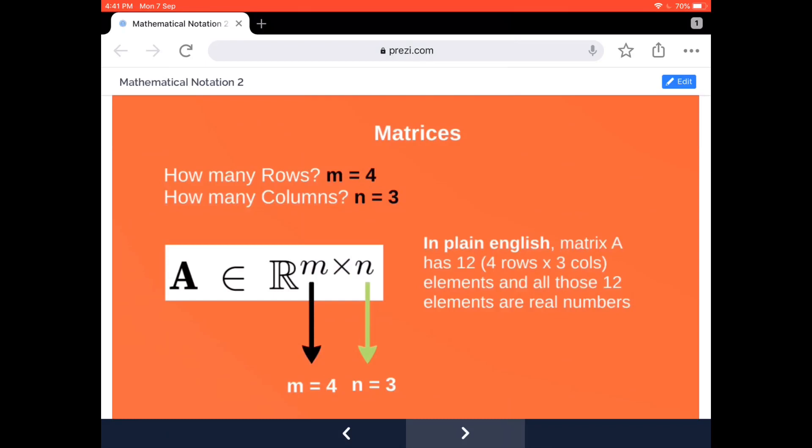four rows. How many columns do we have? We have three. So how many values do we have? It's 4 × 3, which is 12. In plain English, we're going to say matrix A has 12 elements and all those 12 elements are actually real numbers. If it's something else, then we'll specify it that way.